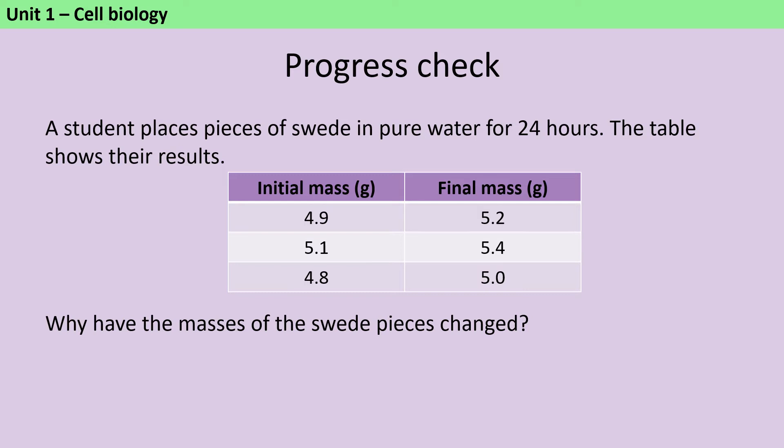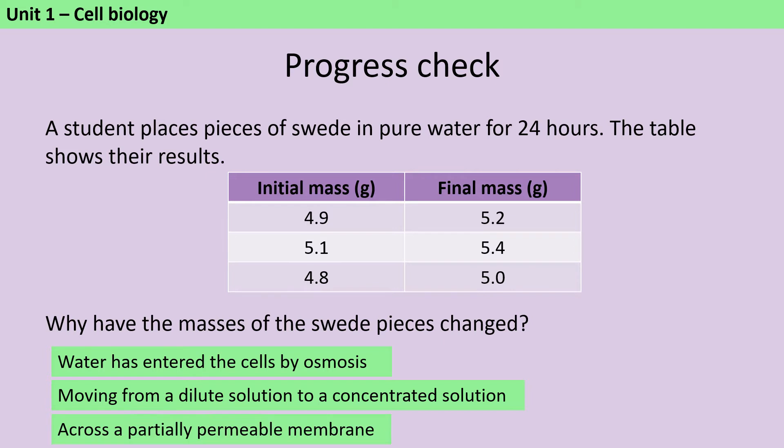So the reason is that the water has moved by osmosis. And as we can see, it's entered the cells, and that's why they've got heavier. The reason that this has happened is that water always moves from a dilute solution to a concentrated solution, and there's nothing more dilute than pure water. And then this has happened across a partially permeable membrane, which I always want to mention when I'm discussing osmosis.